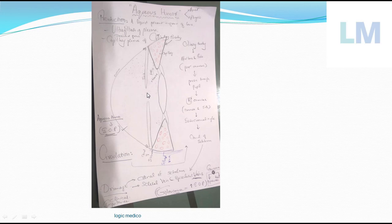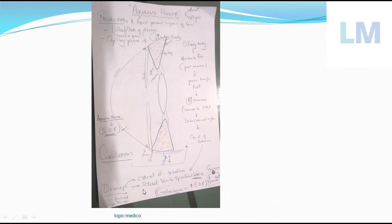Summary: production through the ciliary body; circulation from the posterior chamber via the pupil into the anterior chamber; drainage through the iridocorneal angle via the canal of Schlemm into the scleral and episcleral veins. The aqueous humor maintains the shape of the eyeball and the intraocular pressure throughout this course.